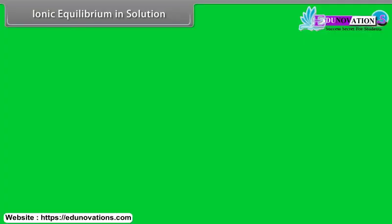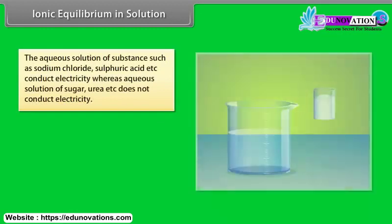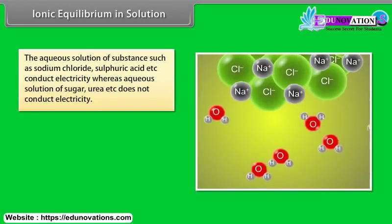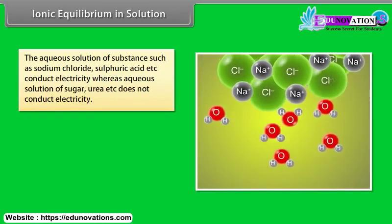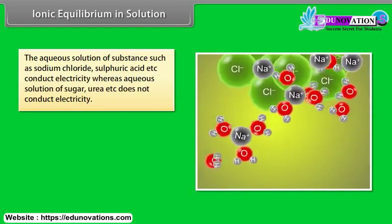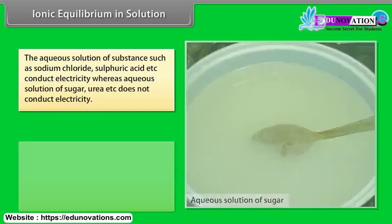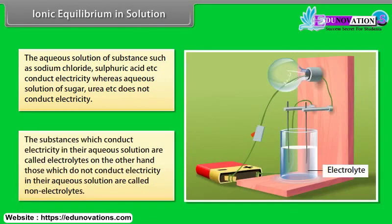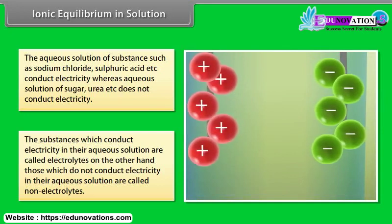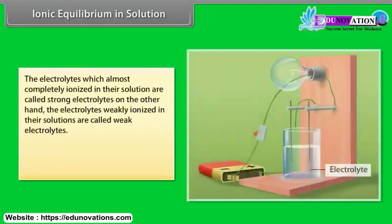Ionic equilibrium in solution. The aqueous solution of substances such as sodium chloride, sulfuric acid, etc. conduct electricity, whereas aqueous solution of sugar, urea, etc. does not conduct electricity. The substances which conduct electricity in their aqueous solution are called electrolytes. Those which do not conduct electricity are called non-electrolytes.